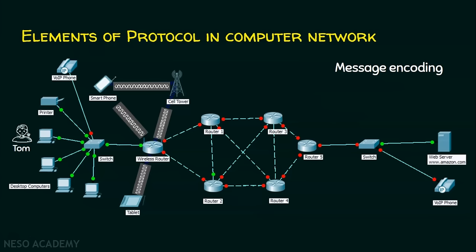Let Tom be the user. Tom wants something from amazon.com. He opens the browser, gives the request to amazon.com, and amazon.com responds back with what Tom needs. If we observe, Tom's computer is connected with a wired medium. This transmission medium is also called a link. This computer converts the data into signals and sends the signal on the transmission medium, which is the cable here.